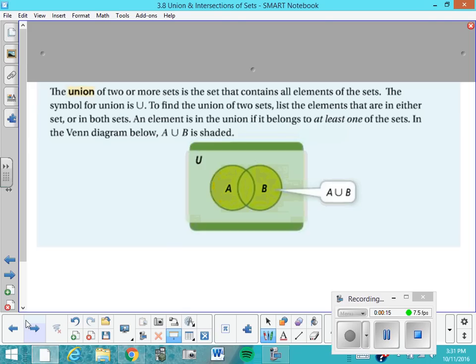The union of two or more sets is the set that contains all the elements of the sets. It's abbreviated with the big U that looks like that. I would like you to copy down the underlined sentence.